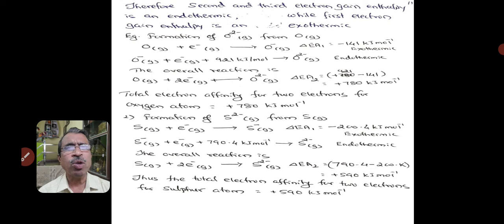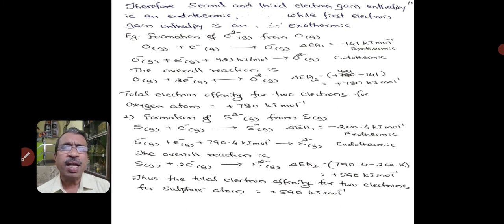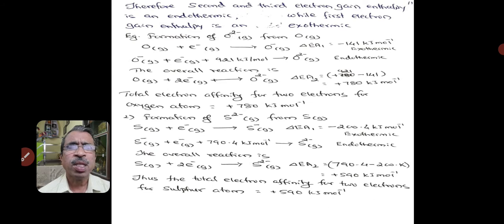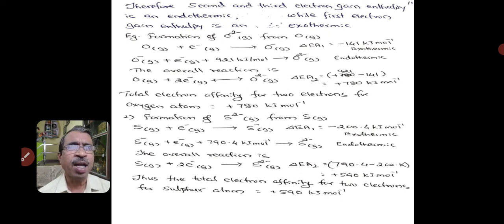Let us take an example of the formation of an oxide ion from an isolated oxygen atom in gaseous state. If you take a gaseous oxygen atom and add an electron, we get the O⁻ ion in gaseous form, and the electron gain enthalpy is −141 kilojoules per mol, which is an exothermic reaction. When an electron is added to this O⁻ ion to become the oxide ion O²⁻ in gaseous state, it needs 921 kilojoules per mol of energy. Therefore, this reaction is endothermic.